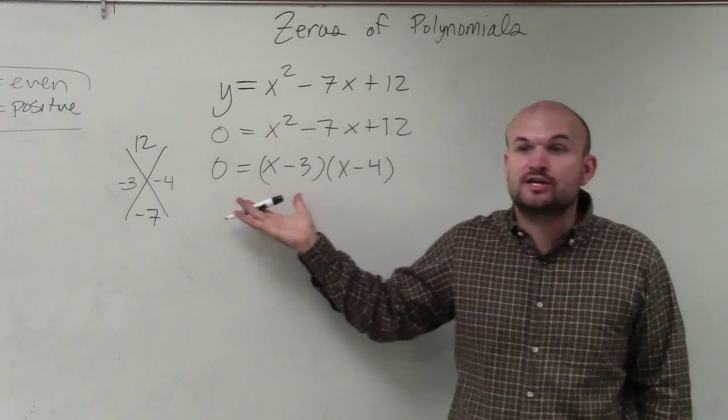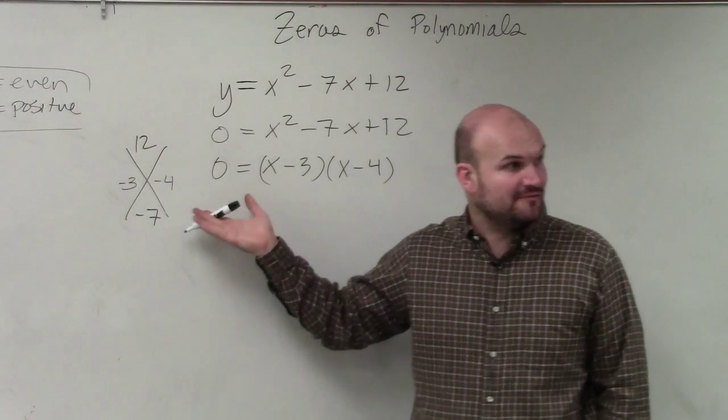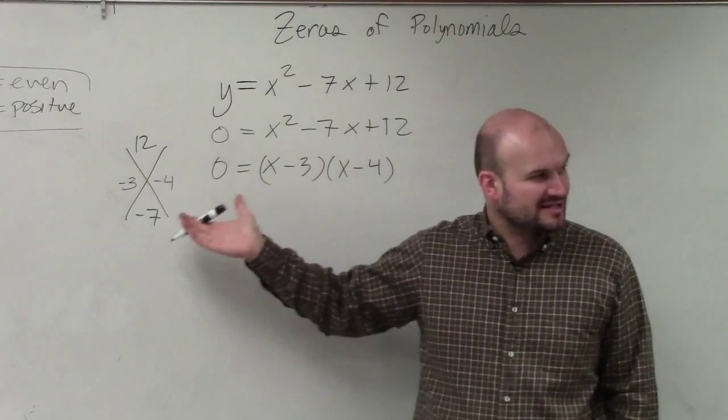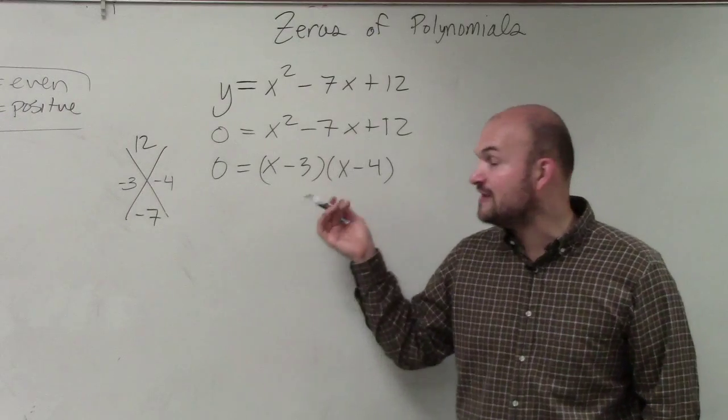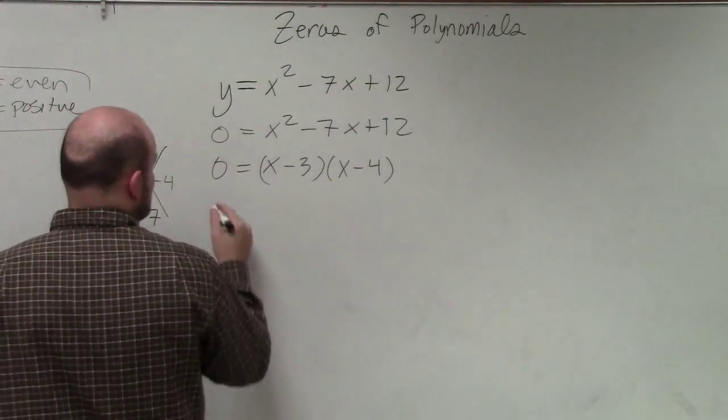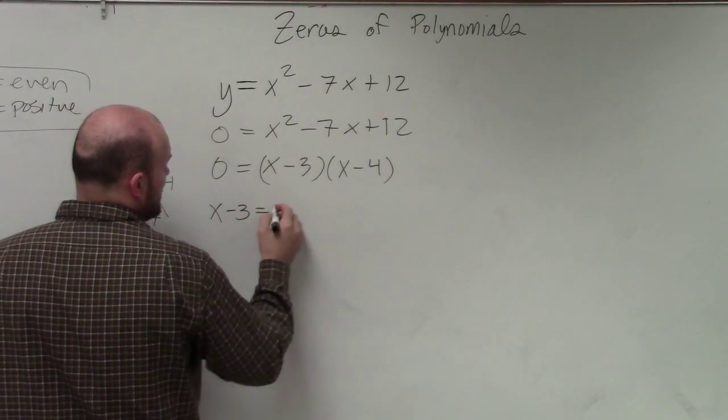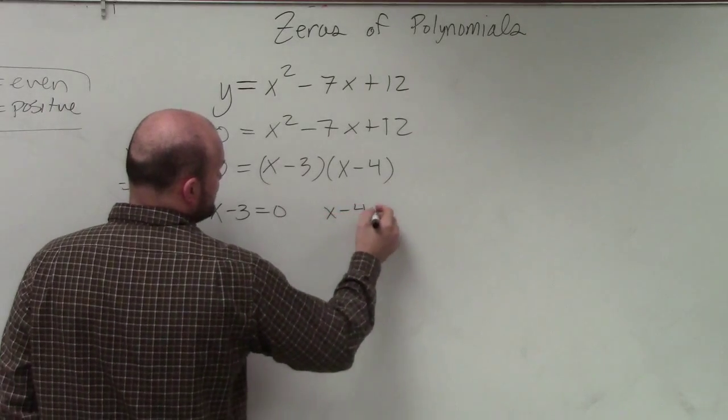This is also what we call factorization. If you guys remember that vocabulary on your last test, a lot of you guys had trouble with that when it was doing the factorization. This would be a representation of factorization, because that's the factors. Then I just apply the zero product property by setting each factor equal to 0.